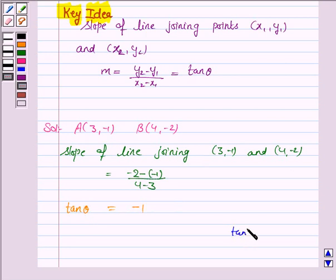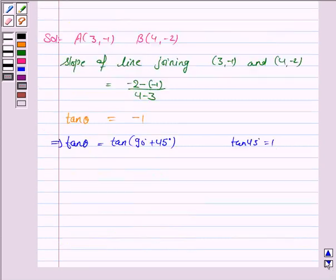Now, we know that tan 45° is 1, and since tan θ equals -1, this implies tan θ equals tan(90°+45°), that means tan 135°.